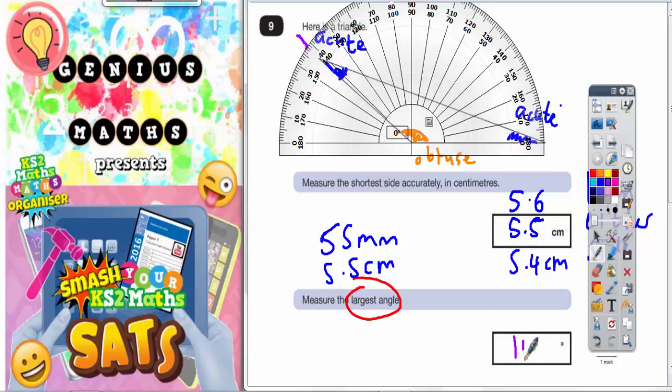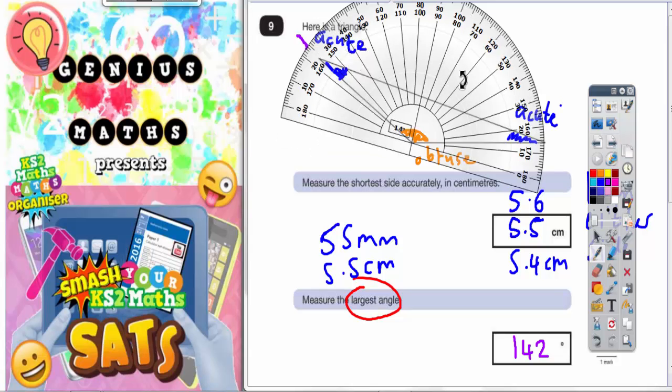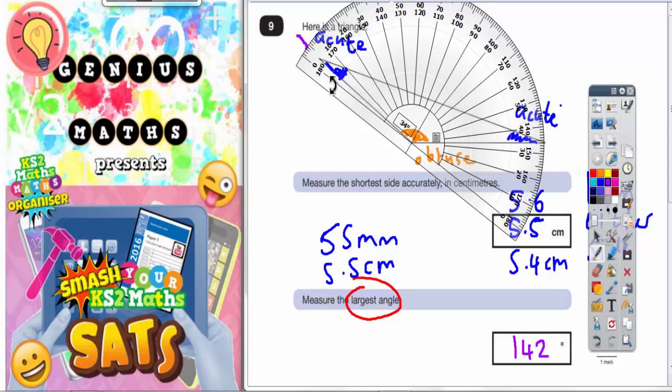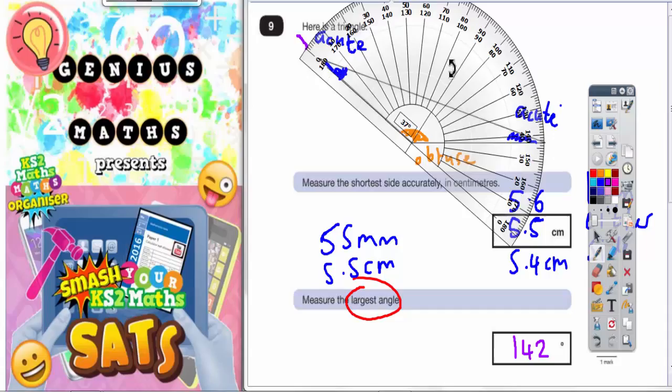You could actually have done it using the other zero over here. If you'd have tilted the other zero to be going up along this line here like so, and this time counting round from that zero, you'd be counting down the outside: 10, 20, 30, 40, 50, 60, 70, 80, 90, 100, 110, 120, 130, 140—and the bottom of the triangle levels there. So again, get 142.